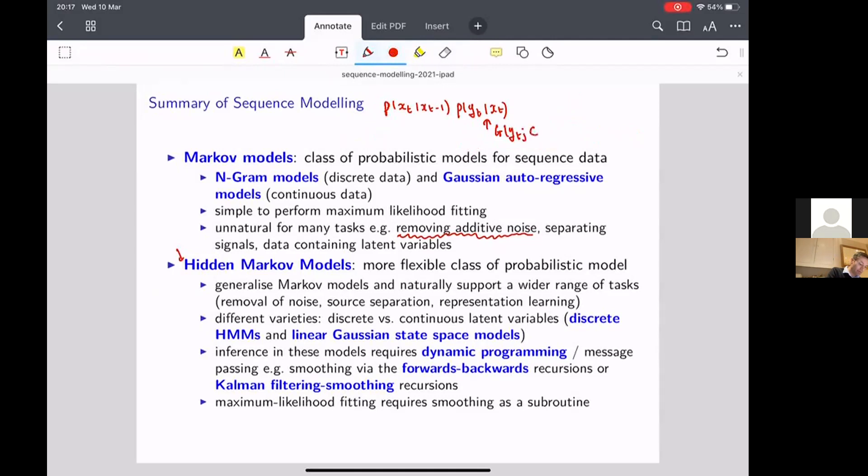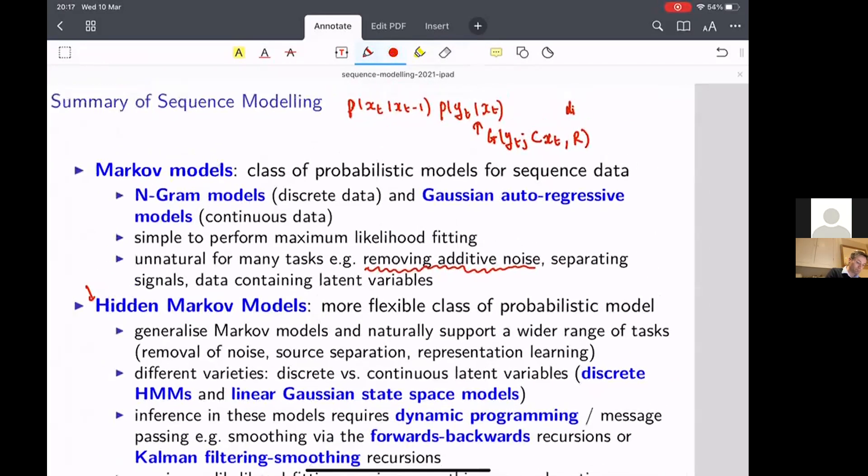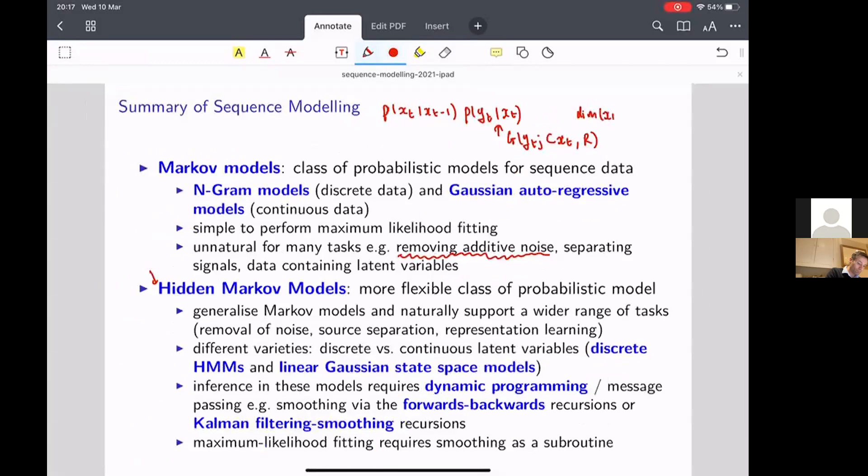and in our case, this had a mean of C times X of T and a variance equal to R. This is the form we use in the notes. If we set the dimension of our latent variables to be equal to our observed variables here,